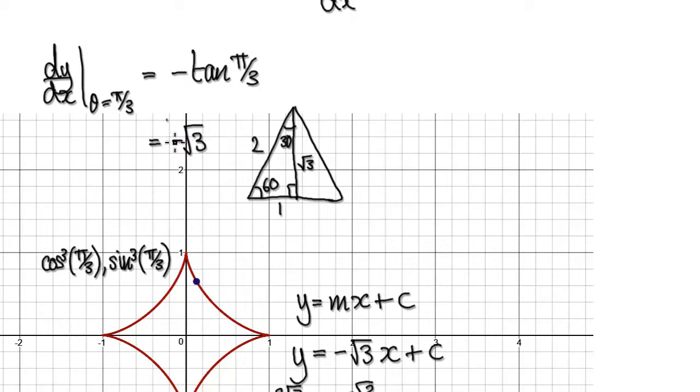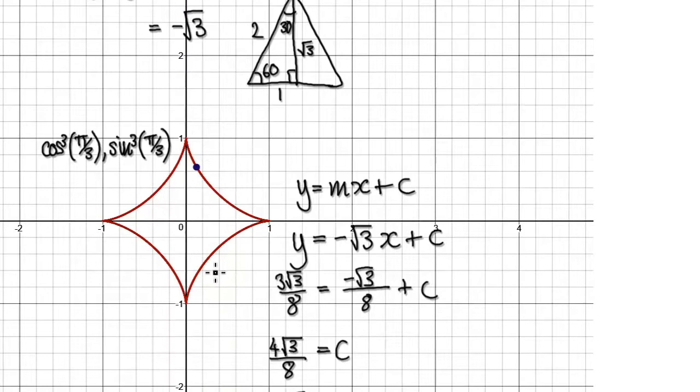So the gradient will be given by this at this point here. Now that we know the gradient is negative root 3, we would put this into here. That would then take us to here.